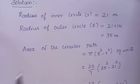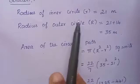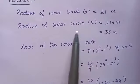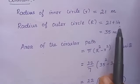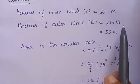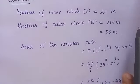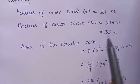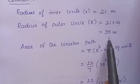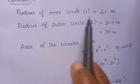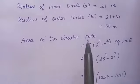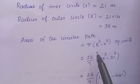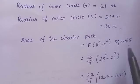Solution: radius of the inner circle given in the question is 21 meters. Radius of the outer circle — we add 21 plus 14, because the 14-meter-wide path is laid around the circle — equals 35 meters. Radius of outer circle is 35 meters and radius of inner circle is 21 meters. We find the area of the circular path using π into (R² minus r²) square units.